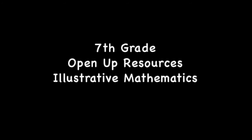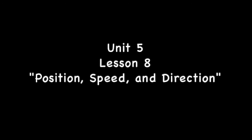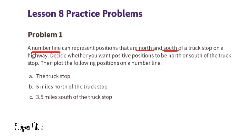7th grade Open Up Resources Illustrative Mathematics, Unit 5 Lesson 8: Position, Speed, and Direction. Problem 1: A number line can represent positions that are north and south of a truck stop on a highway. Decide whether you want positive positions to be north or south of the truck stop, then plot the following positions on a number line.